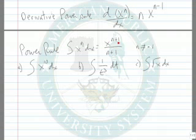Now notice that if n equals negative 1, we have a problem because negative 1 plus 1 is 0. So we're going to exclude that one. That'll be a special case we'll look at later.